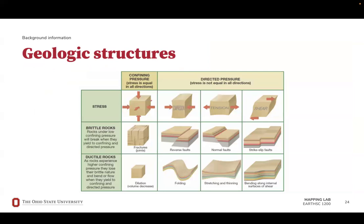Some features shown in geologic maps include structural diagrams we discussed in earlier labs. Divergent plate boundaries cause tension stress, resulting in normal faults and stretching and thinning of the crust. Convergent plate boundaries cause compression stress, leading to reverse faults, thrust faults, and folding. Transform plate boundaries cause shear stress, resulting in strike-slip faults and bending of the crust.